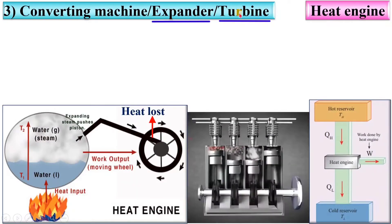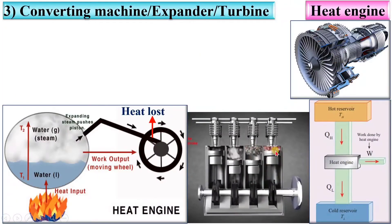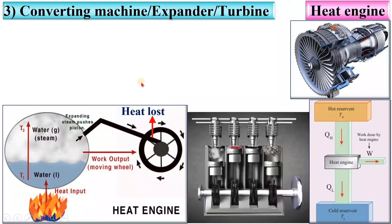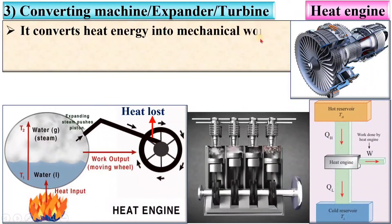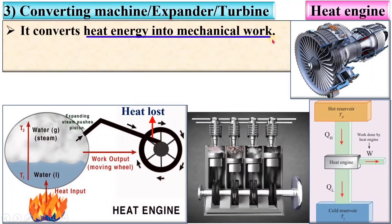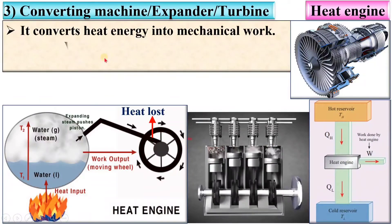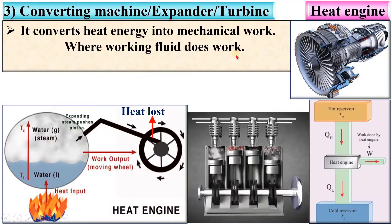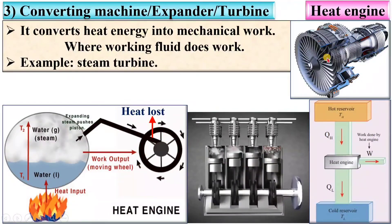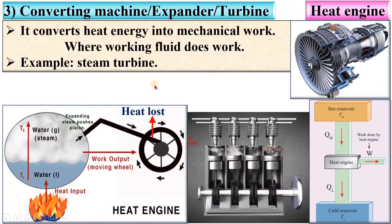Next, converting machine — it can be an expander or it can be a turbine. It is the machine that converts heat energy into mechanical work, where the working fluid does work. Examples include steam turbine, IC engine, etc.